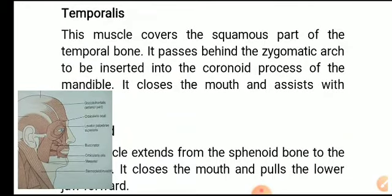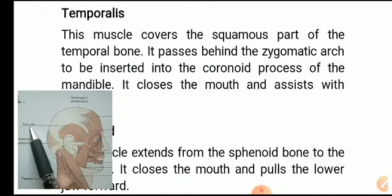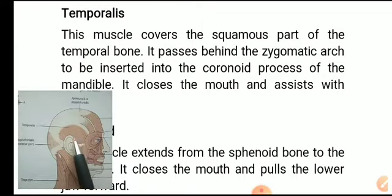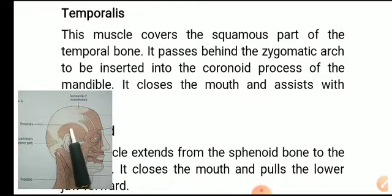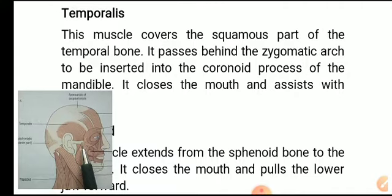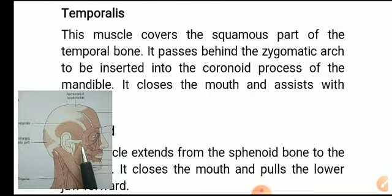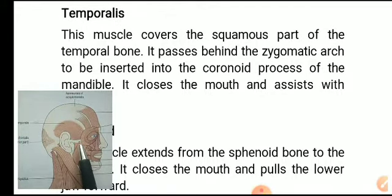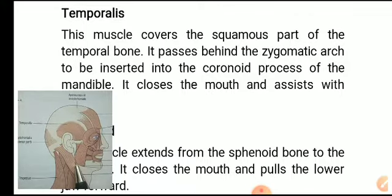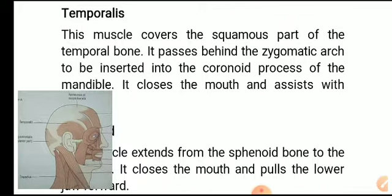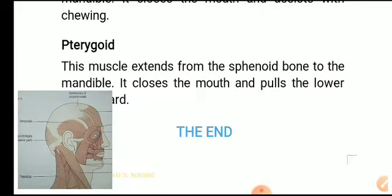Temporalis: this muscle covers the squamous part of the temporal bone. It passes behind the zygomatic arch to be inserted into the coronoid process of the mandible. It closes the mouth and assists with chewing.